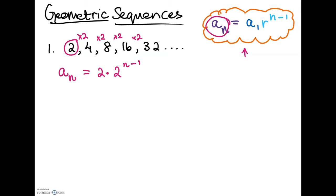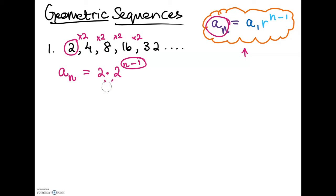One important thing to note: you cannot multiply the two 2s together. 2 is being raised to the power of n minus 1, therefore you cannot write this as a of n equals 4 to the power of n minus 1 — it does not work that way. You just need to leave it as is. If you want to make it clearer you could put brackets around the second 2, writing a of n equals 2 times (2) to the power of n minus 1.